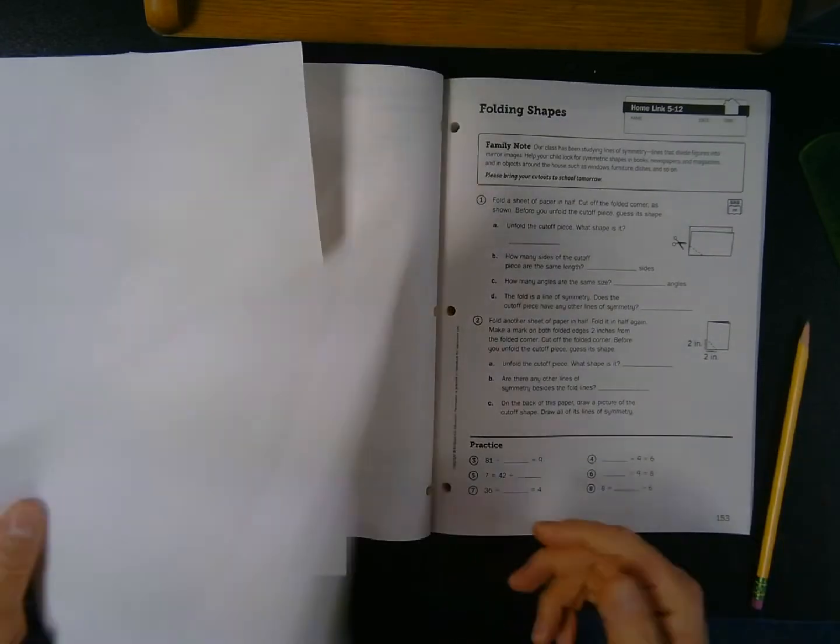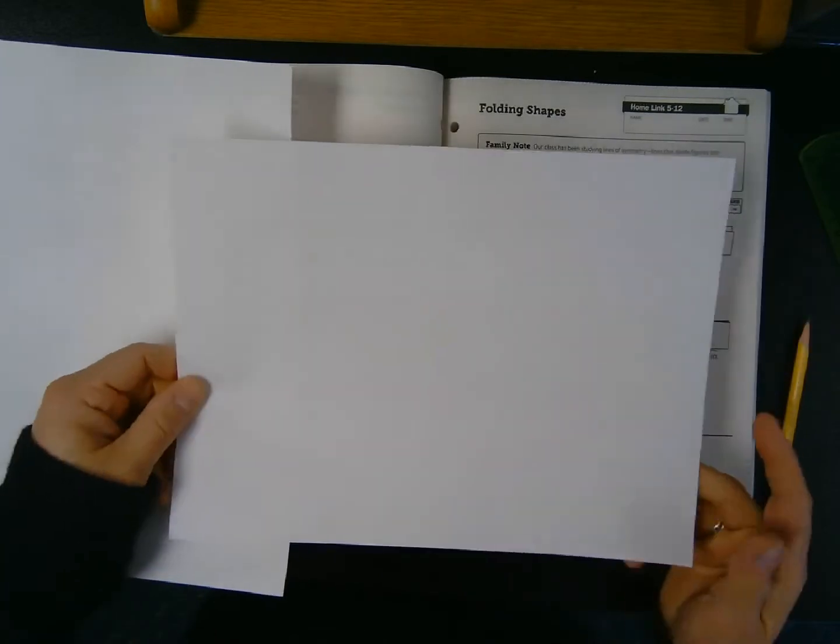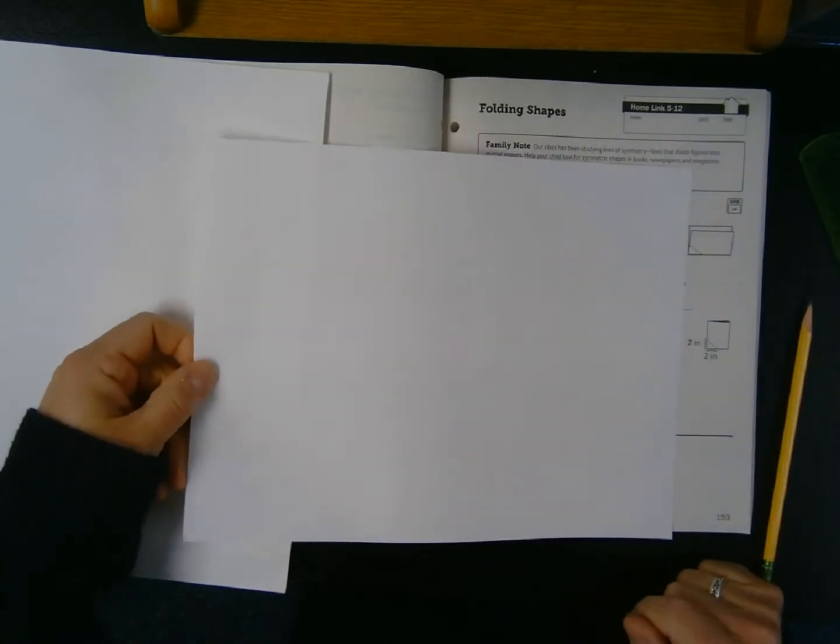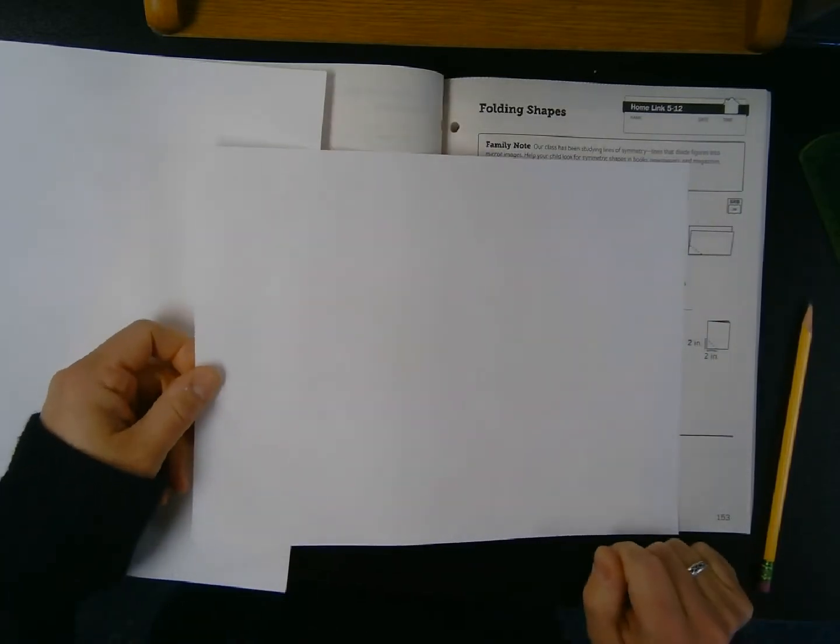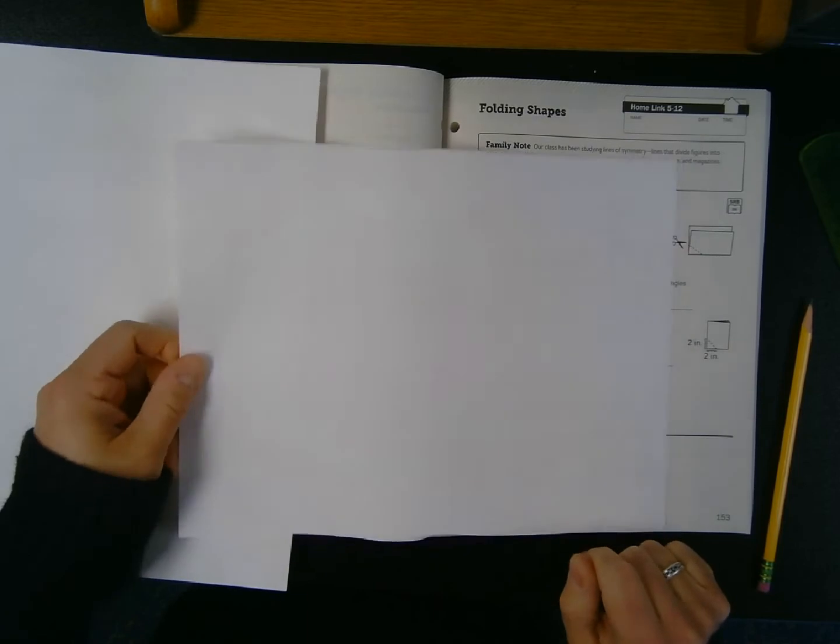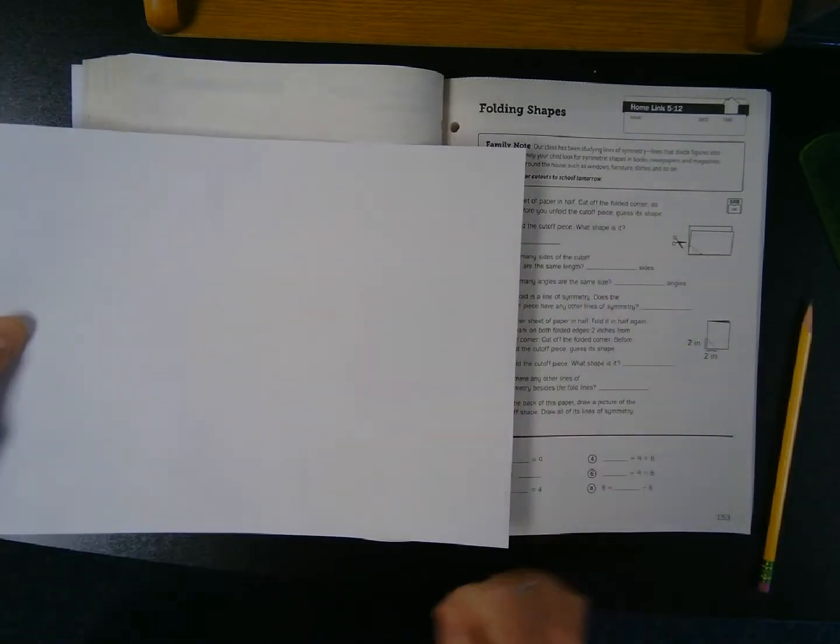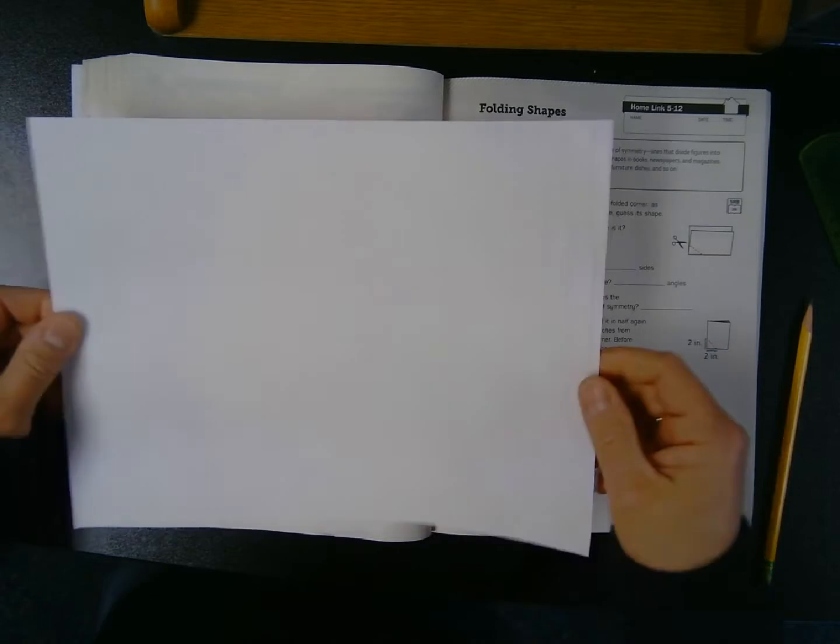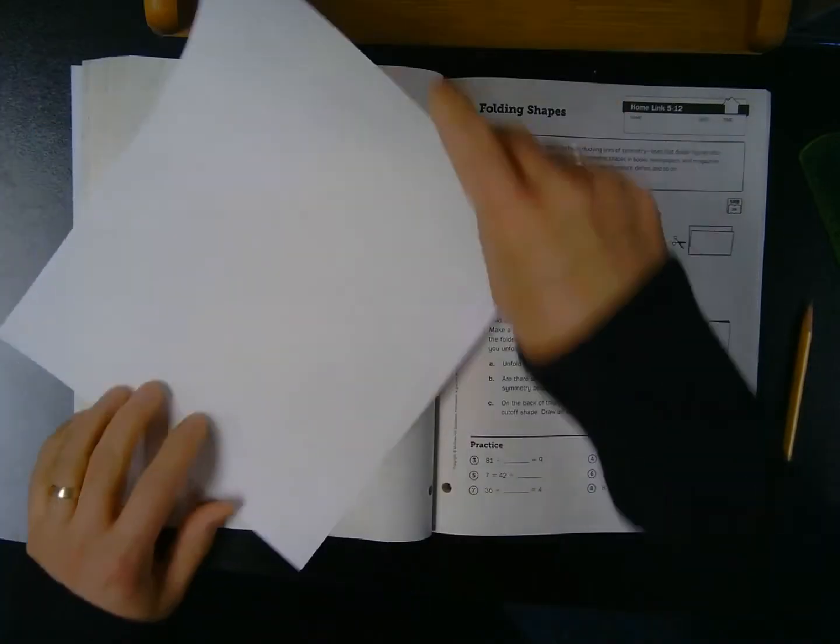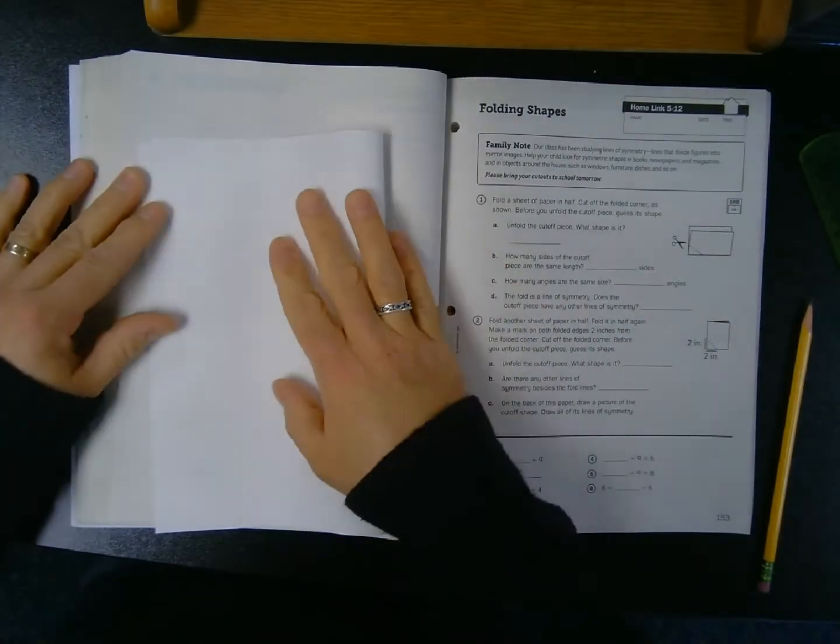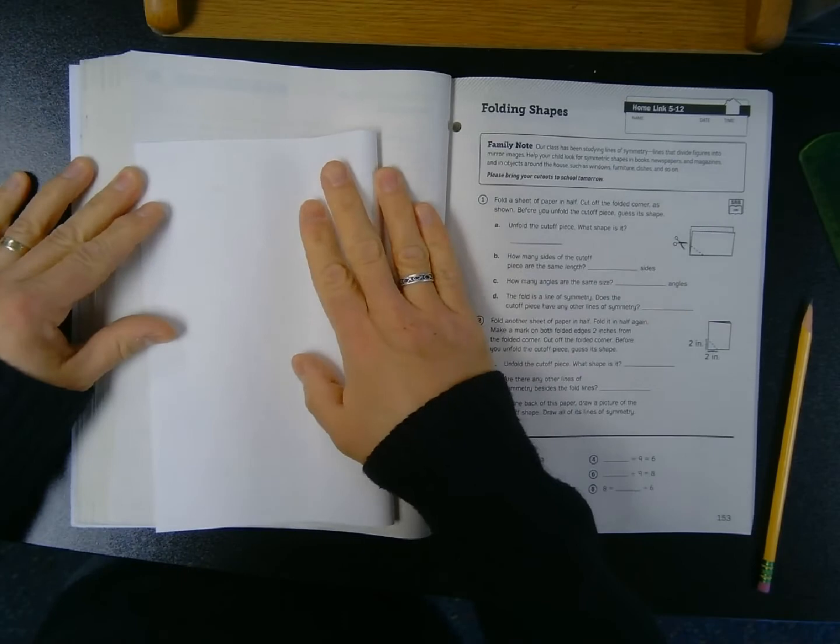So it says, fold a sheet of paper in half. Now I have this sheet of construction paper, but you can use notebook paper or just copy paper from your mom or dad's printer. I've got some construction paper, and what you've been asked to do is fold it in half, and I'm going to fold it hamburger fold style.